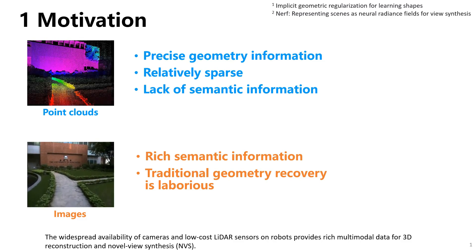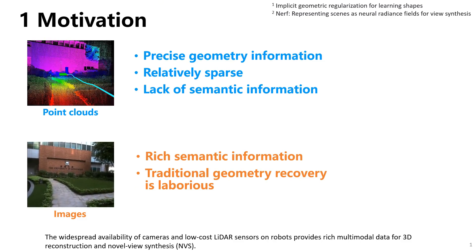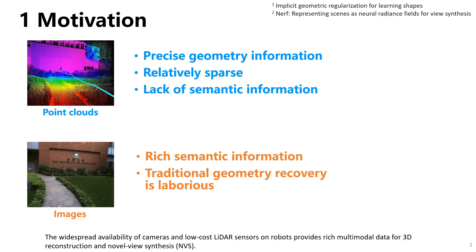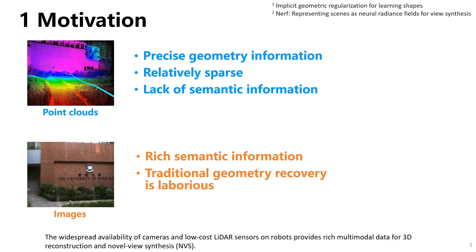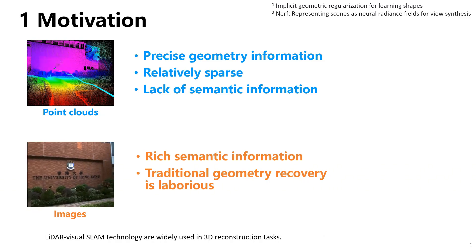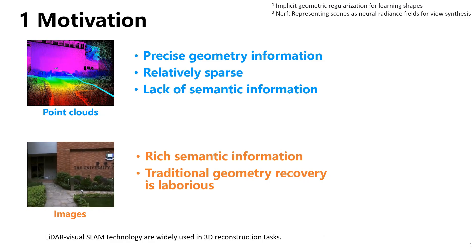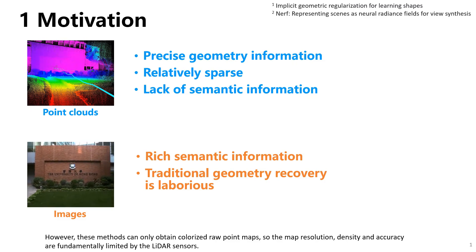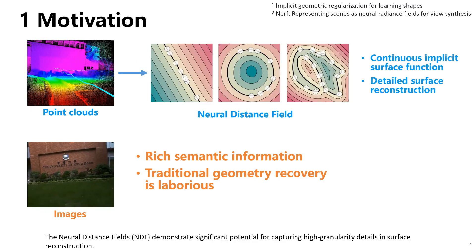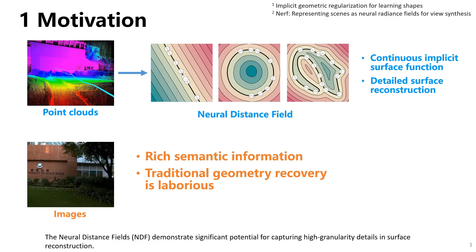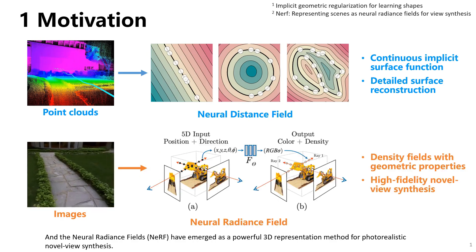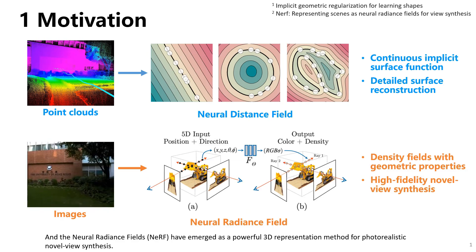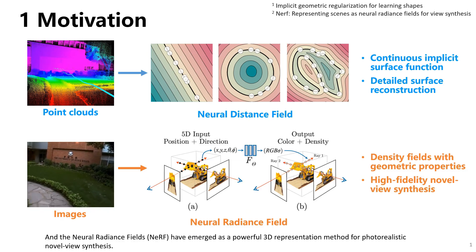The widespread availability of cameras and low-cost LiDAR sensors on robots provides rich multimodal data for 3D reconstruction and novel view synthesis. LiDAR visual SLAM technologies are widely used in 3D reconstruction tasks. However, these methods can only obtain colorized raw point maps, so the map resolution, density, and accuracy are fundamentally limited by the LiDAR sensors. The neural distance fields demonstrate significant potential for capturing high-granularity details in surface reconstruction, and the neural radiance fields have emerged as a powerful 3D representation method for photorealistic novel view synthesis.